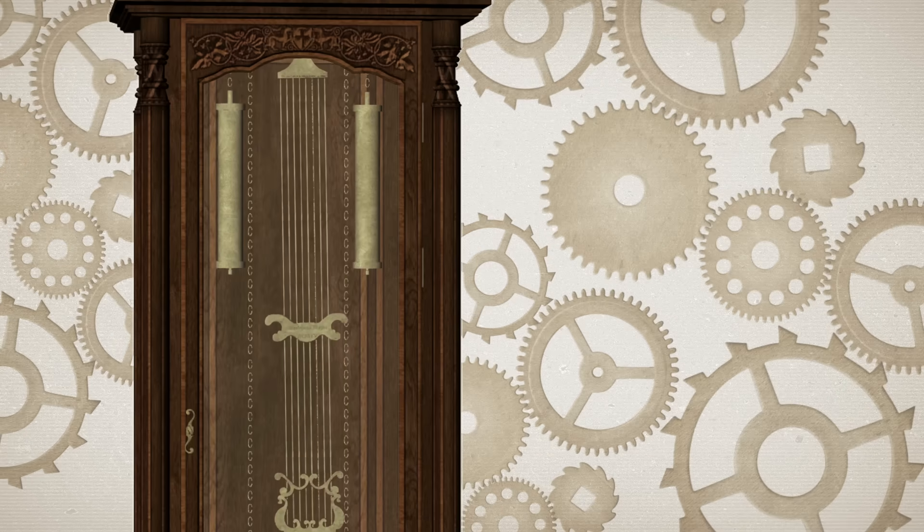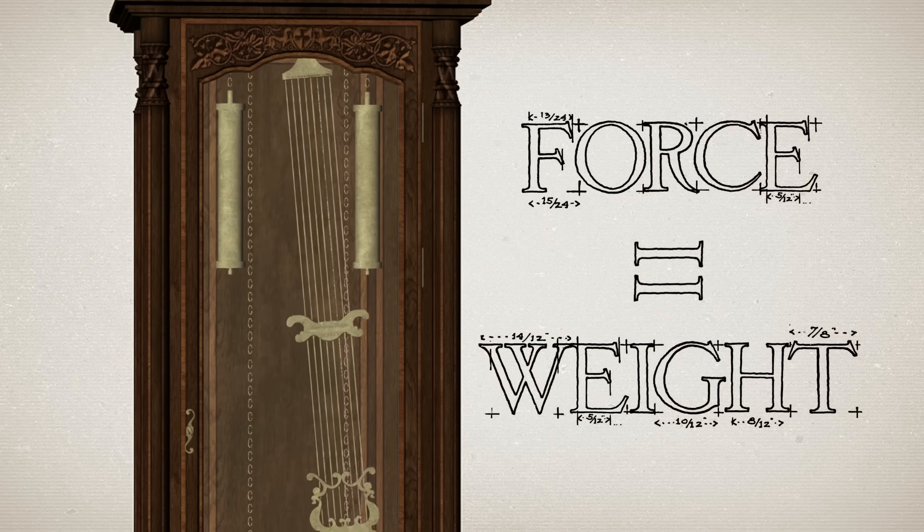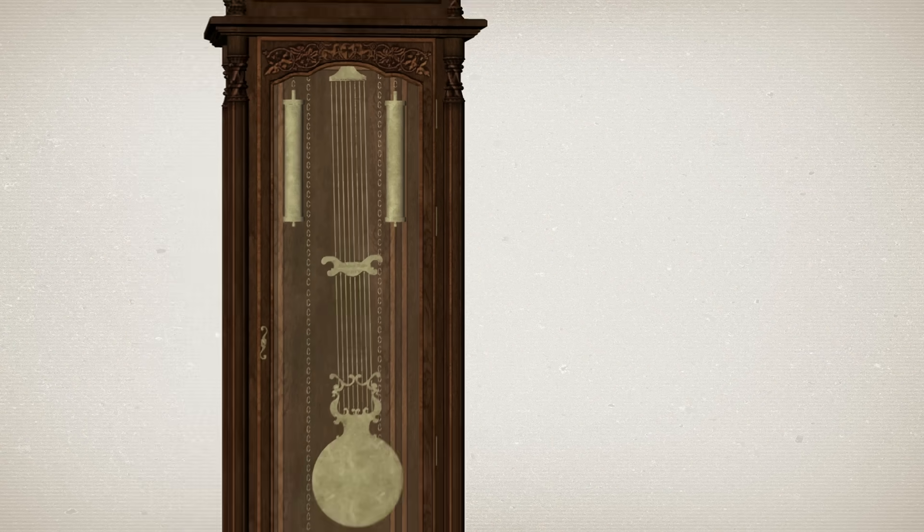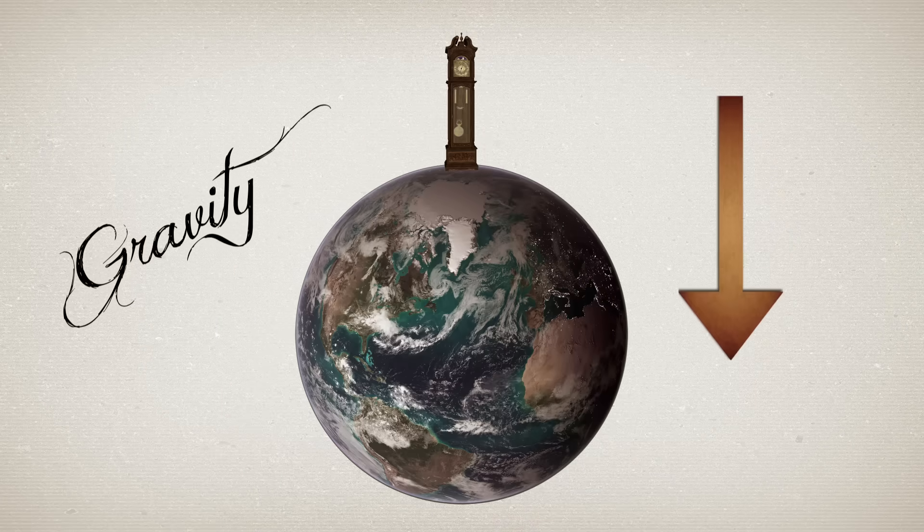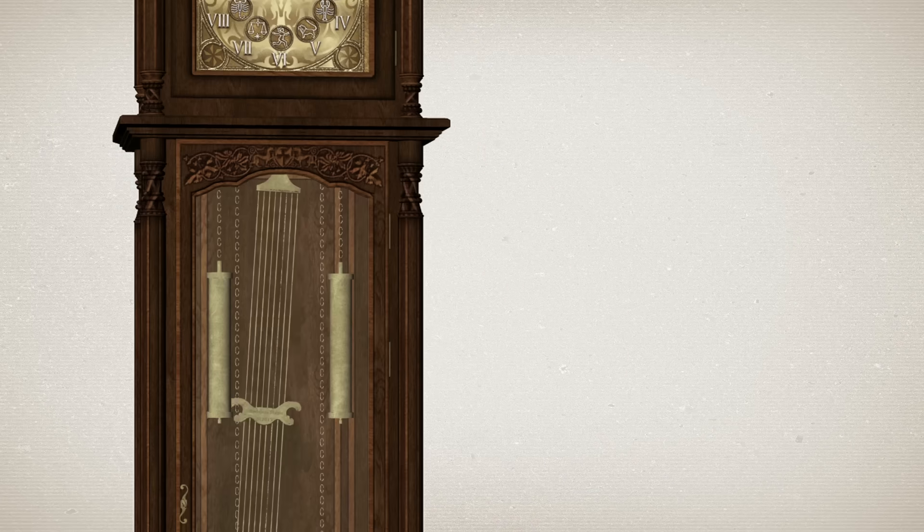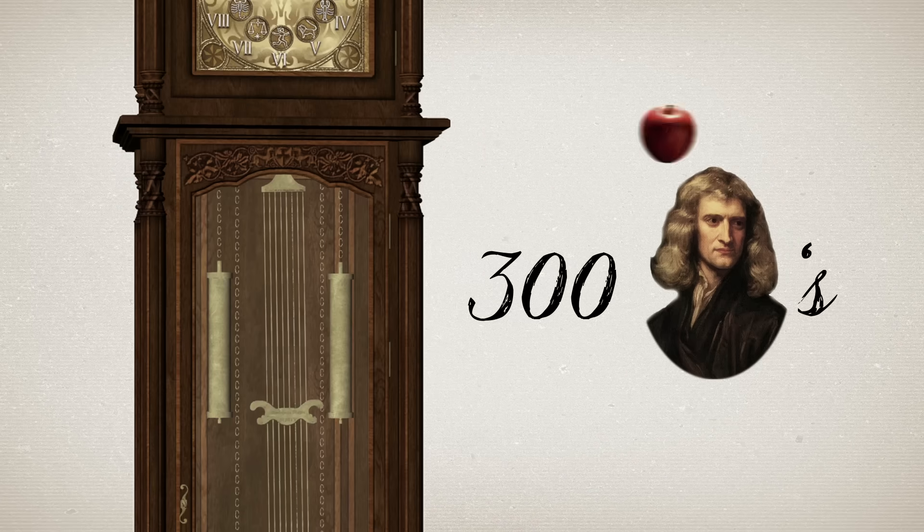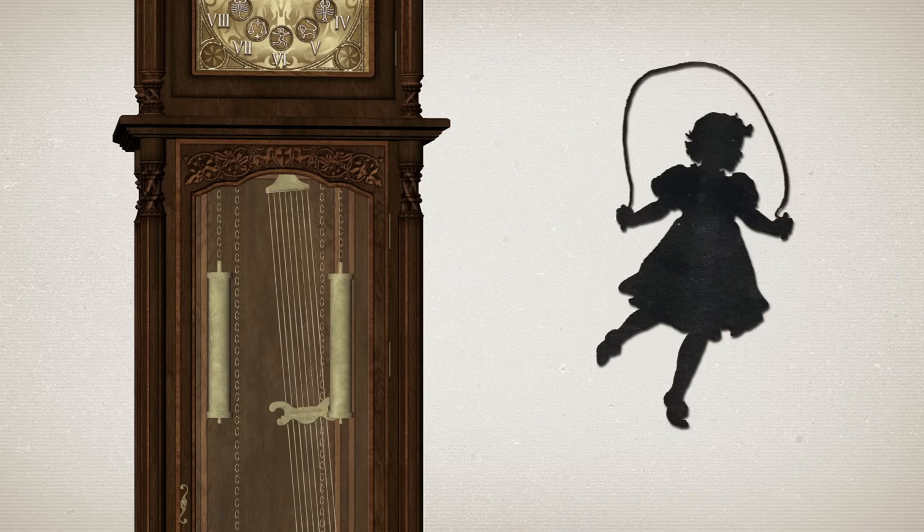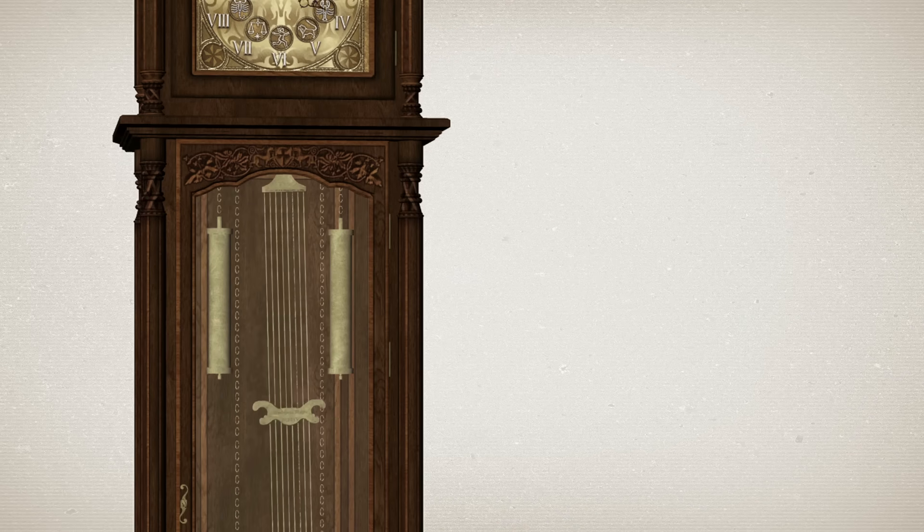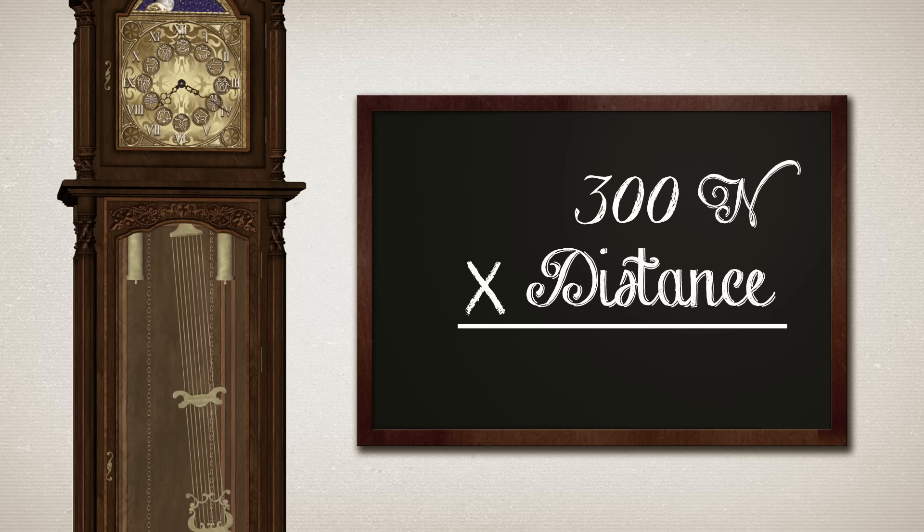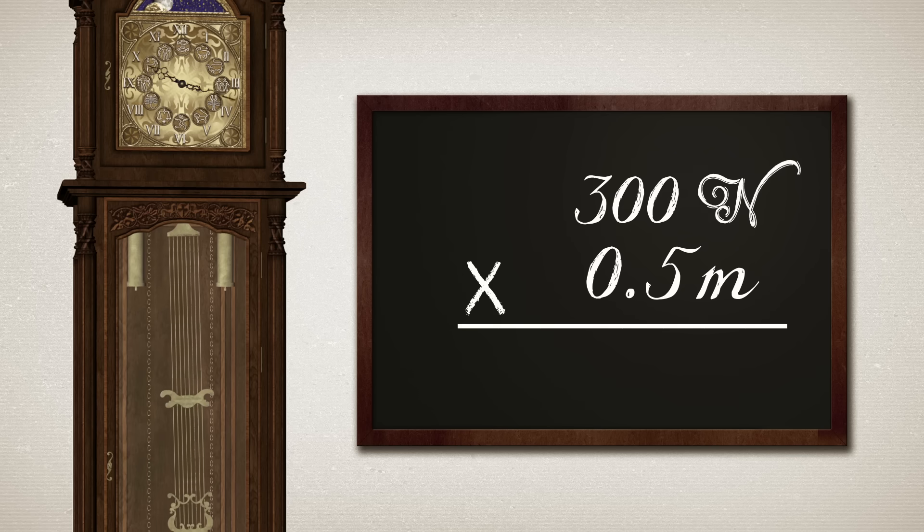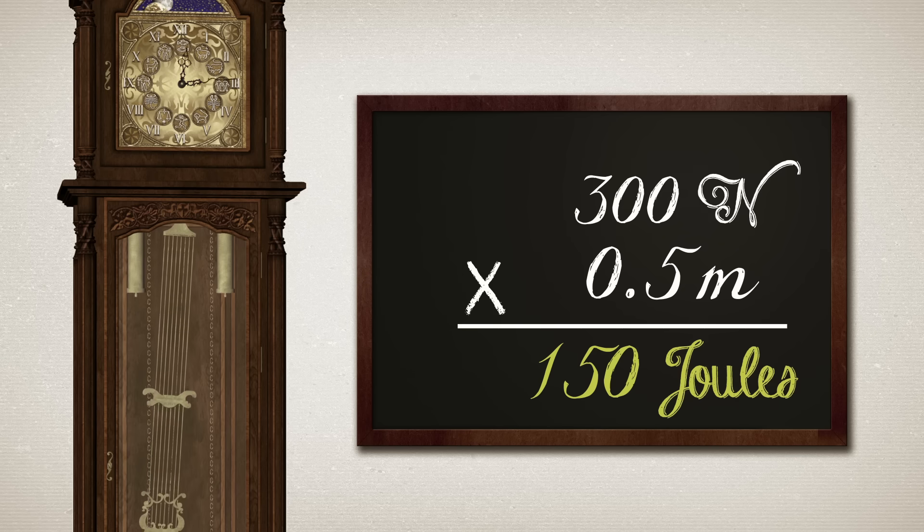To raise the metal cylinders, we need to apply a force equal to their weight, that is, equal to the force of gravity pulling downward on the cylinders. These cylinders weigh 300 newtons, which is pretty heavy, about as much as a small child. And if we lift them one-half meter, then we do 300 newtons times one-half meter, or 150 joules, of work.